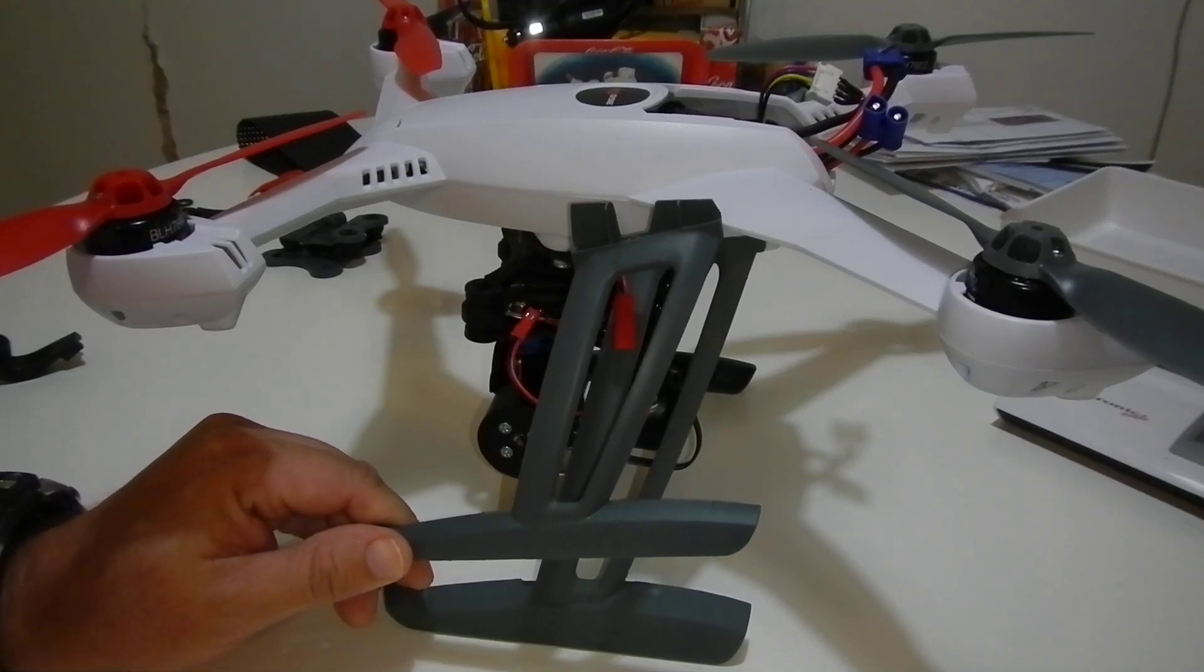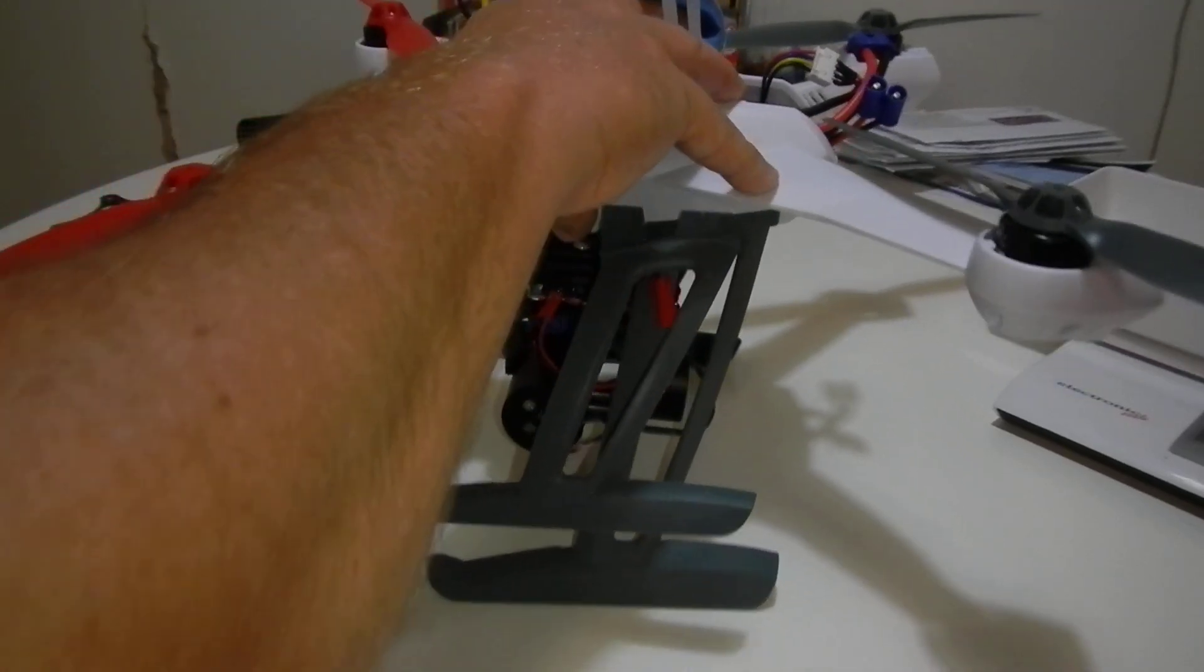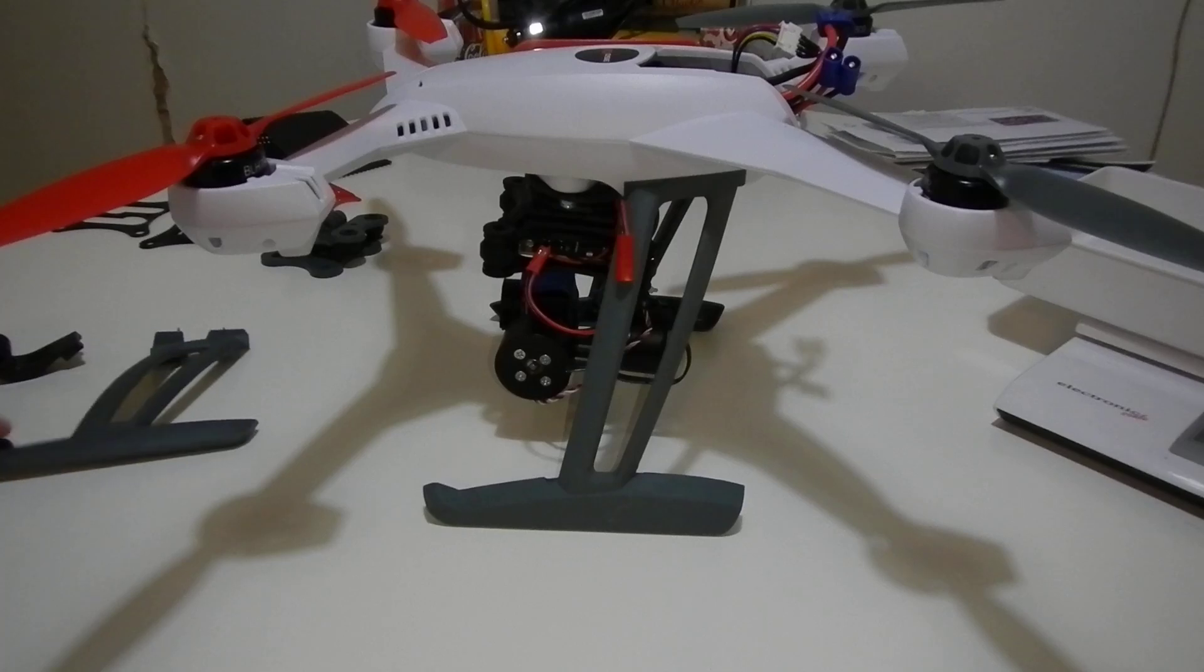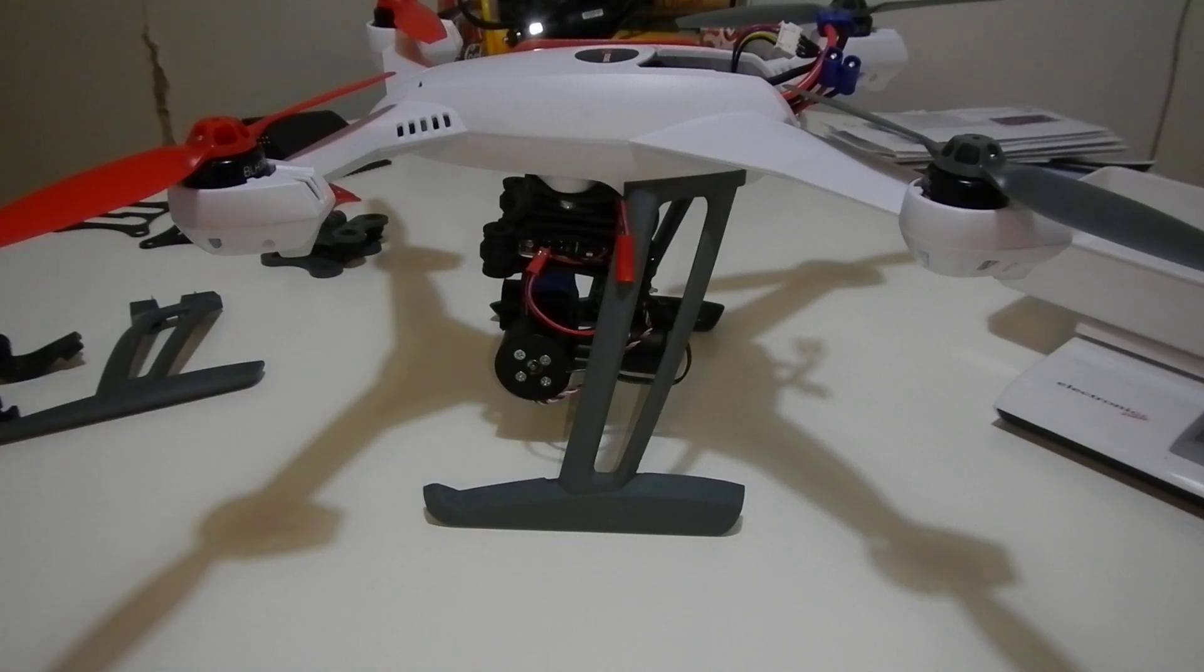This is the stock factory gear. And this is the tall gear. So you can see that it's quite a bit taller. It gives you plenty of ground clearance under the gimbal mount with this quick disconnect system.